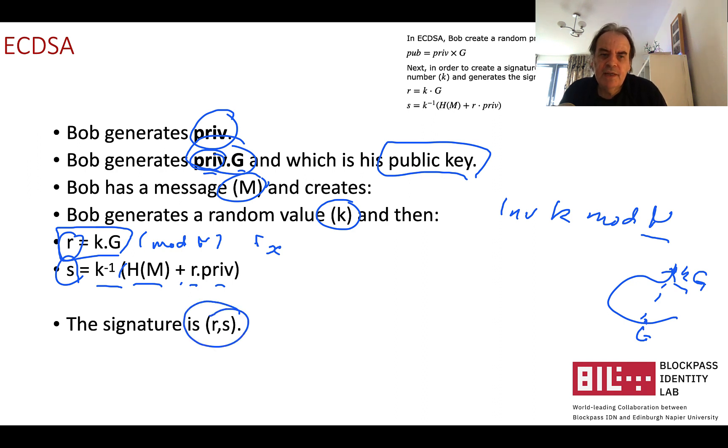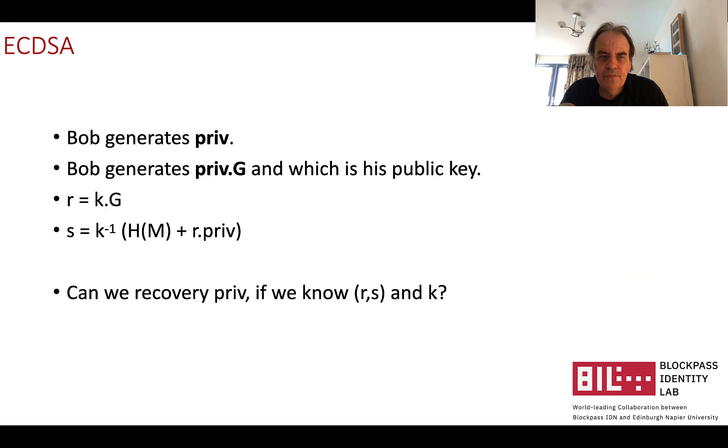The signature then becomes r, s. But if Bob releases one of the nonce values with his signature, is it possible now for an intruder to find out his private key?